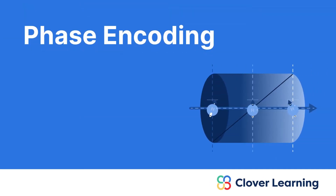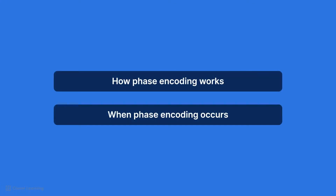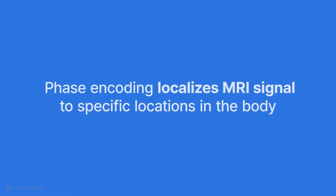Hey everybody! Welcome to today's lesson on spatial encoding. This lesson focuses on phase encoding, including how it works and when it occurs during a pulse sequence. Phase encoding is one of the ways we are able to localize the MRI signal to specific locations in the body, so this concept is important to understand.